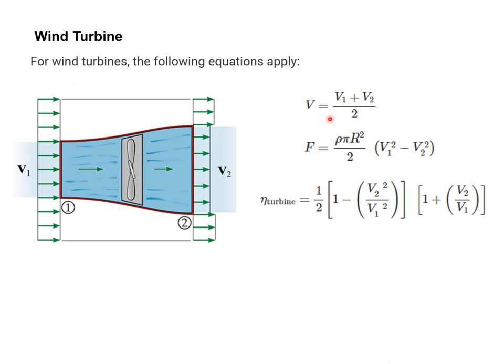For wind turbines, the following equations apply which are similar to those for the propeller. You have the Freud's theorem equivalent, you have the thrust, and the efficiency is a little bit more complicated.